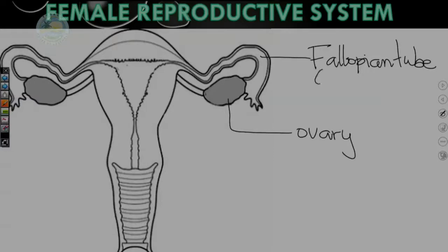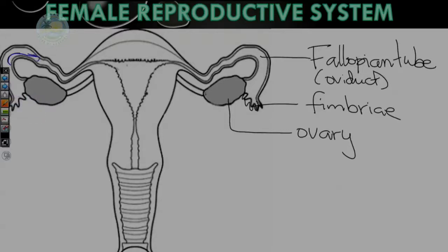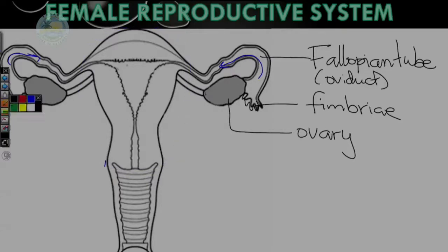Depending on your source, you may see the word oviduct, but we tend to use fallopian tube more. At the start of the fallopian tube, you will see finger-like projections called the fimbriae, which waft the eggs into the fallopian tube. Both fallopian tubes lead into an inverted pear-shaped structure known as the uterus — or the womb — which is the biologically correct term.